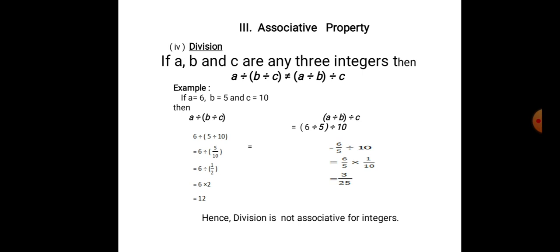On the right hand side, (a divided by b) divided by c — substituting values, you get (6 divided by 5) divided by 10. Division becomes multiplication by reciprocal. So, 6/5 into 1/10 is 6/50. 6/50 in its simplest form is 3/25. Therefore, 12 is not equal to 3/25. Hence, left hand side and right hand side are not equal. Therefore, division is not associative for integers.